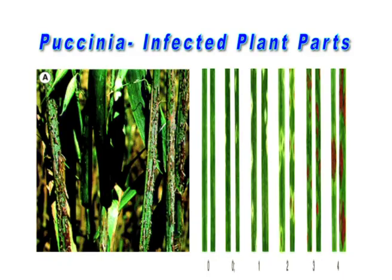Puccinia is an obligate parasite whose life cycle is completed on two host plants: wheat and the barberry plant. The cell structure of Puccinia consists of multicellular mycelial organisms.